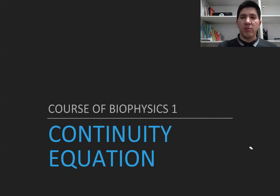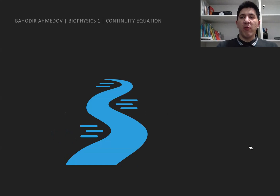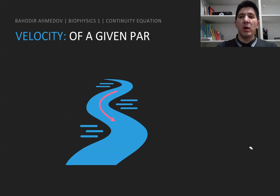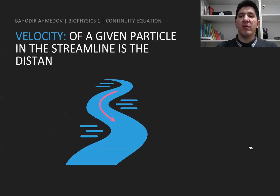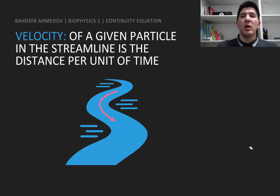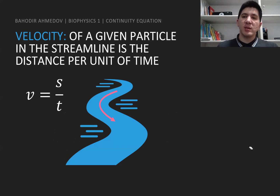Let's try to write down the equations. Before we do this, we first need to introduce a couple of concepts. The first concept is the velocity of the fluid — for example, the velocity of water. We define this by looking more deeply at the water: the velocity is the distance passed by the particles of the water per unit of time. Classically, we define this as distance s over time t.